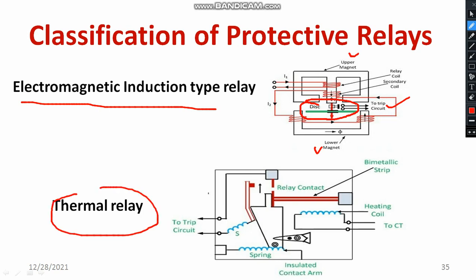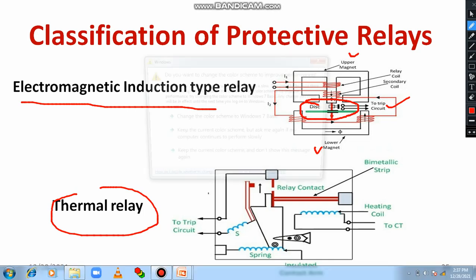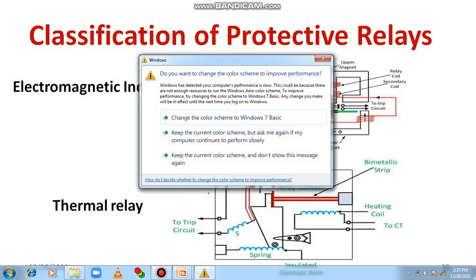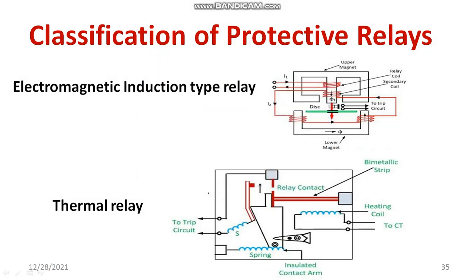Regarding the thermal relay in more detail: there is a heating coil connected to the current transformer. A bimetallic strip is activated based on the heating effect. If the temperature is very high, the relay contact gets activated, thereby connecting to the trip circuit. The current transformer is used for measuring purposes. Based on excess temperature — whenever current or voltage is passed into the coil — the temperature of the metal part increases and that is connected to the tripping circuit. This is how the thermal relay operates.